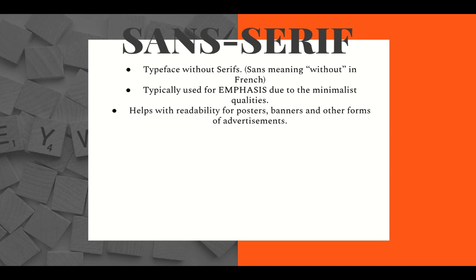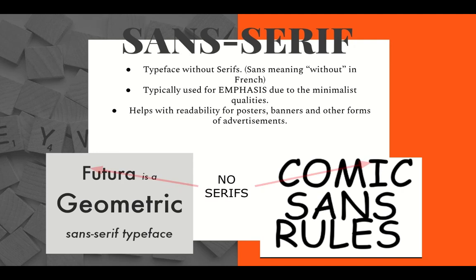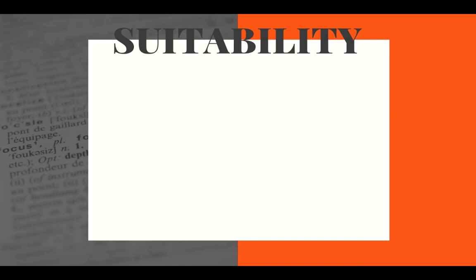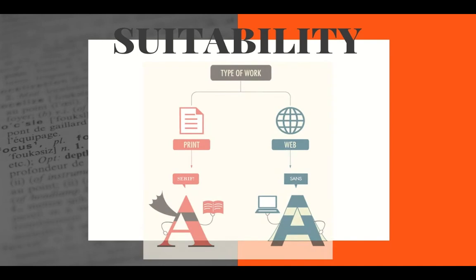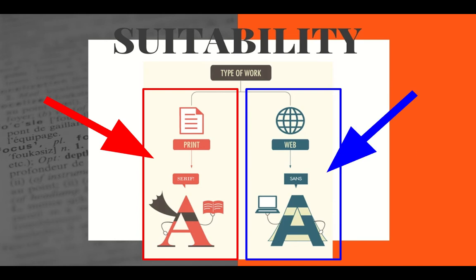Sans-serif also helps with readability for banners, posters, and many forms of advertisements that would be seen from far away. As shown through these two examples, there are no serifs along the vertical and main horizontal strokes, classifying these as sans-serif. When comparing which typeface is best suited for certain platforms, serifs are recommended for hard copy prints, as the horizontal lines aid in the fluidity and readability of the text, as one word effortlessly flows from word to word. For web text, sans-serifs are recommended as serifs may create distortion and impact the clarity of each word.